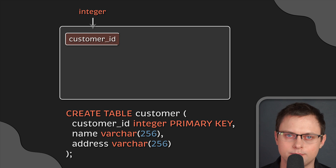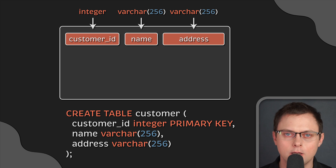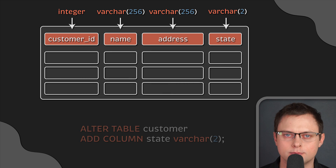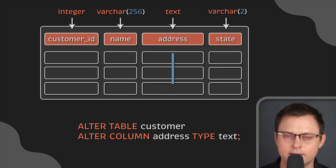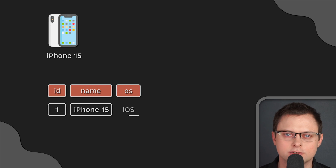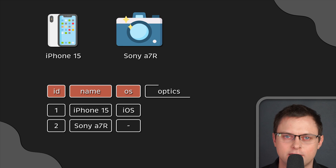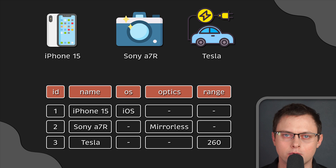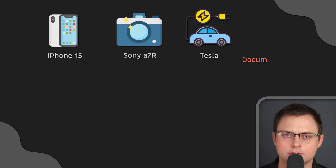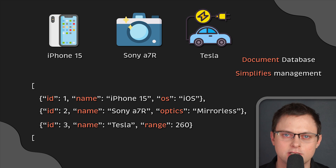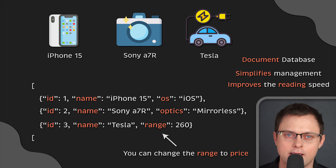Both relational and columnar databases require you to define a schema before you can store anything. If your requirements change over time, you may need to add additional columns or change the data type of one of them. What if you have an e-commerce application with thousands of products? Different products usually have a different number of attributes, and managing thousands of attributes in relational databases is inefficient and can slow down your database. This is an ideal use case for the document database — you can store a product with all its attributes in a single document, simplifying management and improving reading speed, and changing one product's attributes won't affect others.